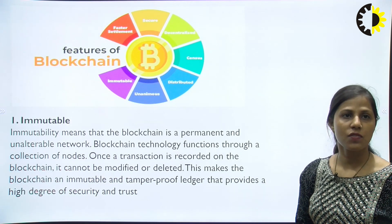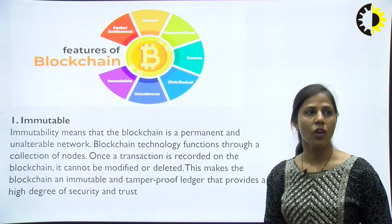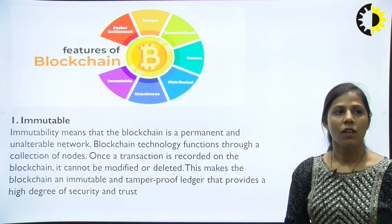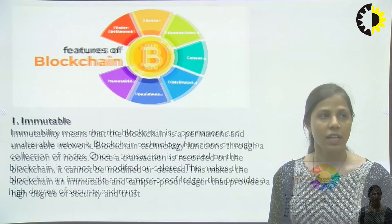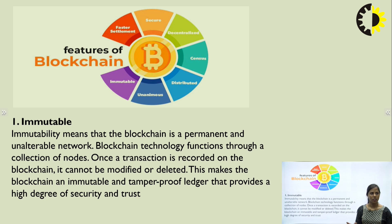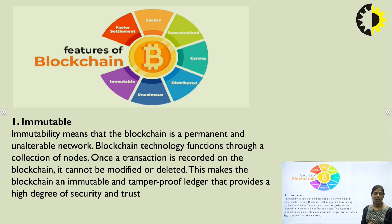Let us discuss each feature one by one. Immutable means whatever data is there should be permanent in an unalterable network — you cannot modify things. Once a transaction is recorded, it cannot be modified or deleted. If you want to modify or delete something, you need a consensus agreement. That is why immutability provides a high degree of security and trust in the blockchain environment.